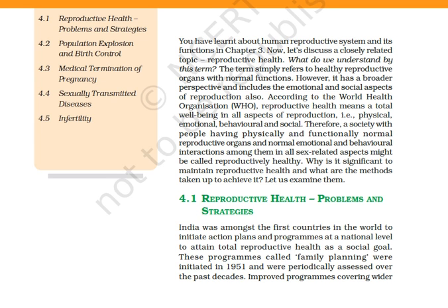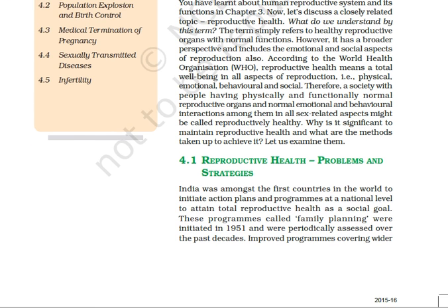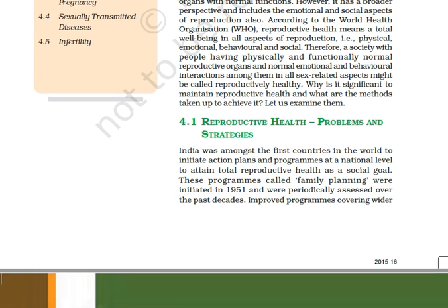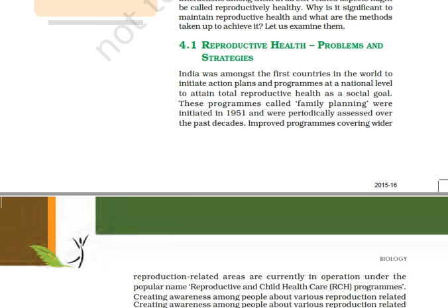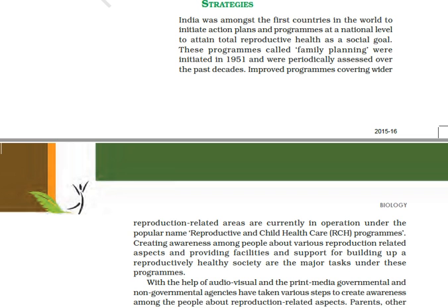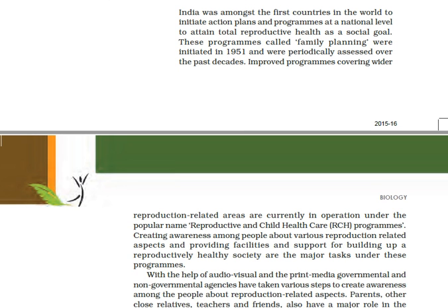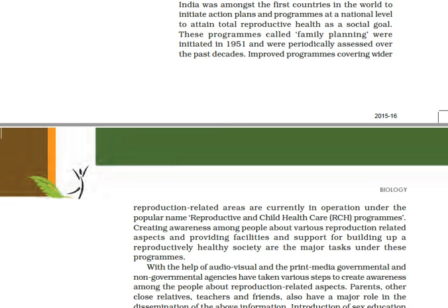The Reproductive and Child Health Care program, also represented by the abbreviation RCH, is important. These RCH programs include a number of initiatives whose two main objectives are to bring awareness among people about various reproduction-related aspects, and to provide facilities and support for building up a reproductively healthy society.